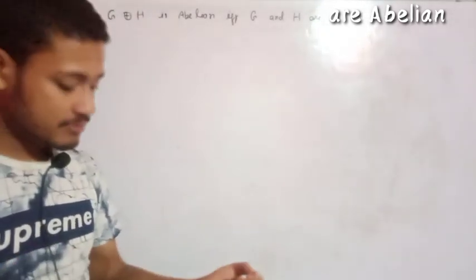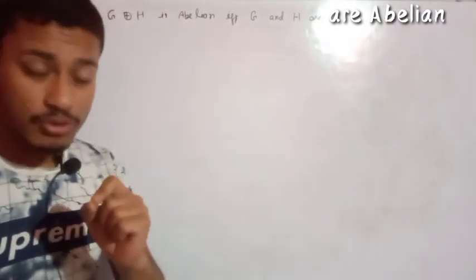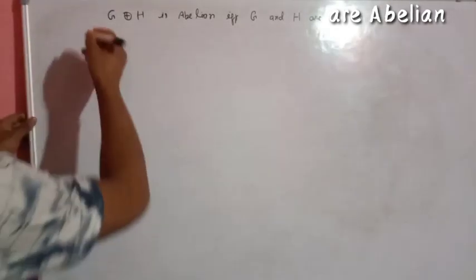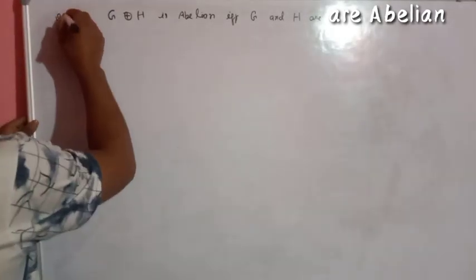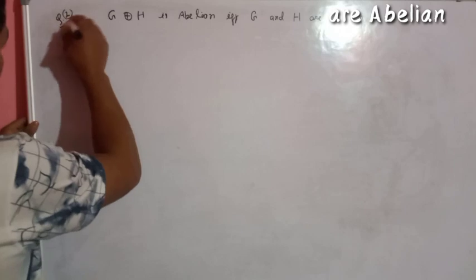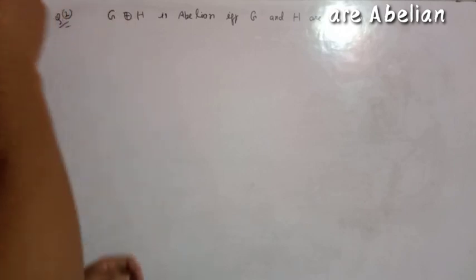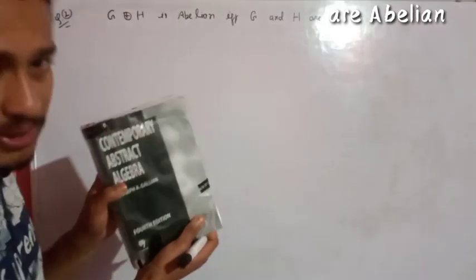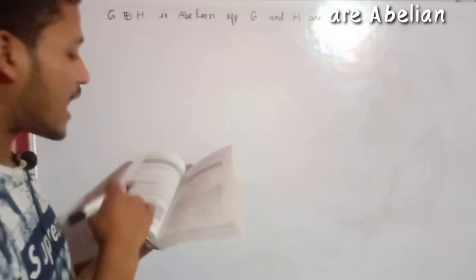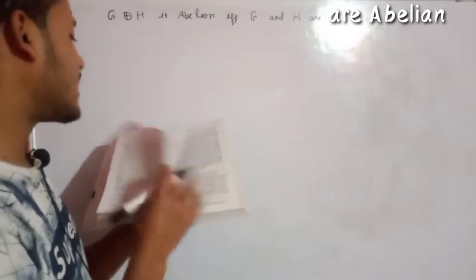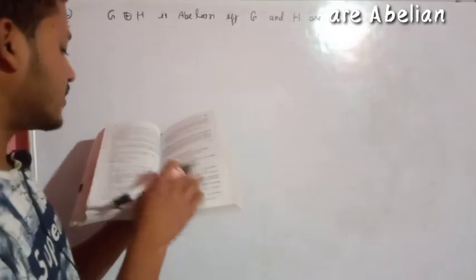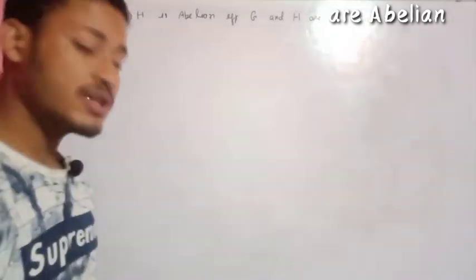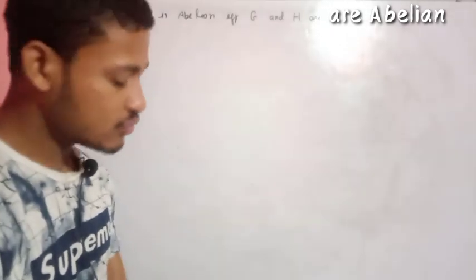This is a question from the Gallian book — Contemporary Abstract Algebra. The external direct product is the topic and this is question number two in the Gallian book.